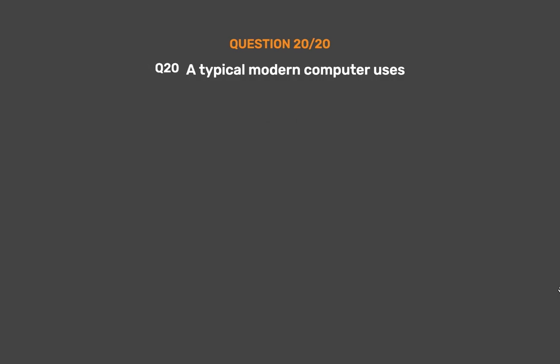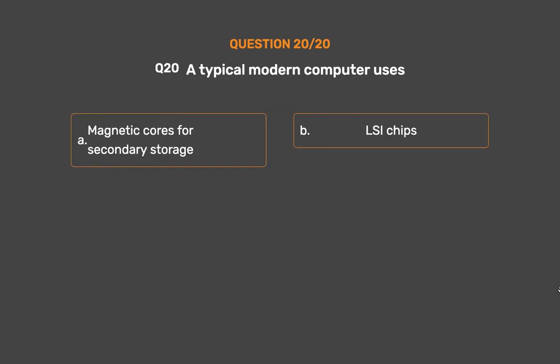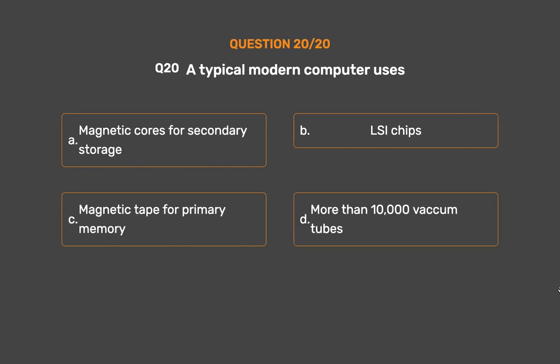Question number 20. A typical modern computer uses. Option A: Magnetic cores for secondary storage. Option B: LSI chips. Option C: Magnetic tape for primary memory. Option D: More than 10,000 vacuum tubes.